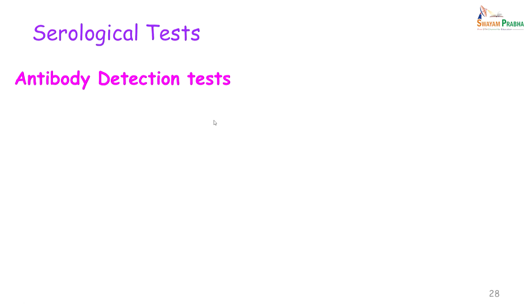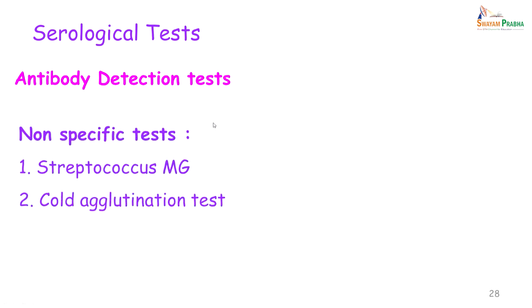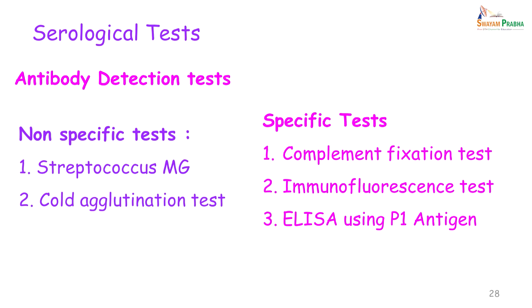Moving on to the serological tests used for the diagnosis of Mycoplasma pneumoniae: we have antibody detection tests, in which the non-specific tests include the Streptococcus MG test and the cold agglutination test. Both these tests are heterophil agglutination tests — that is, the antigen used is shared between Mycoplasma and the Streptococcus or the human RBCs. We also have specific tests: the complement fixation test, immunofluorescence test and the ELISA using the P1 antigen.